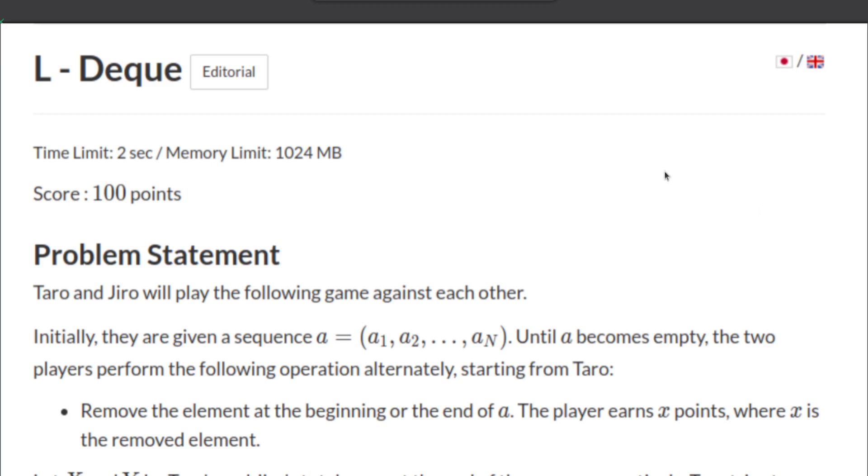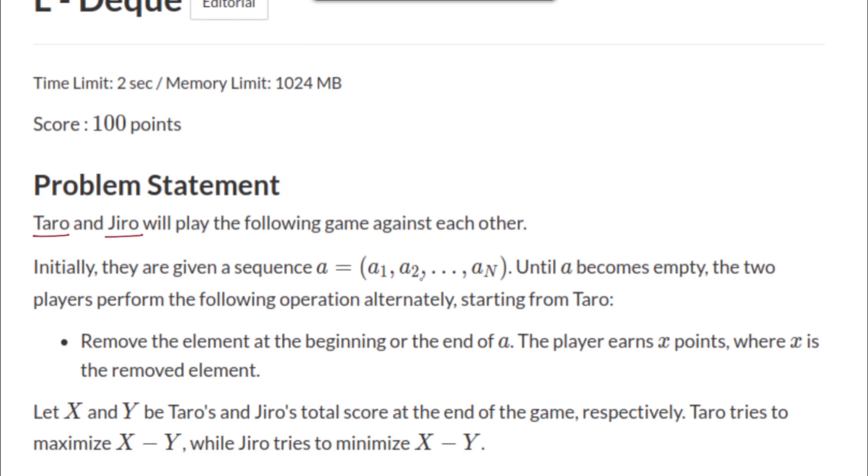Hello and welcome back. This is the solution to problem L DQ from AtCoder Educational DP Contest. The problem statement is as follows: Taro and Jiro will play the following game against each other. Initially they are given a sequence a of length n from a1 to an. Until a becomes empty, the two players perform the following operation alternately, starting from Taro.